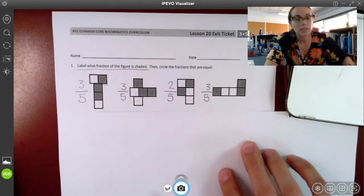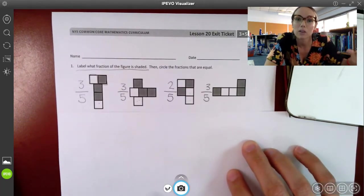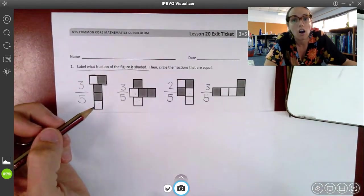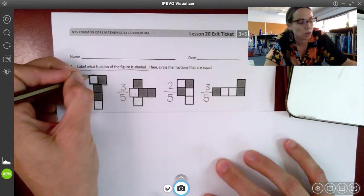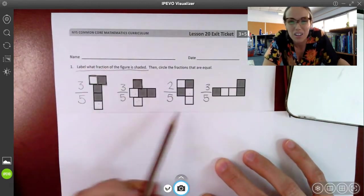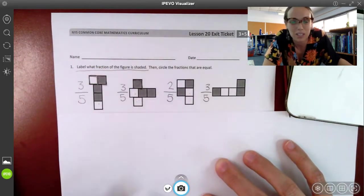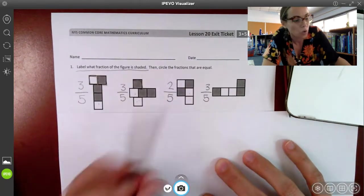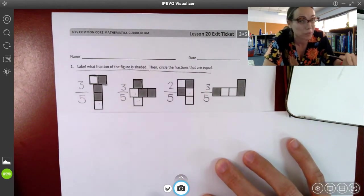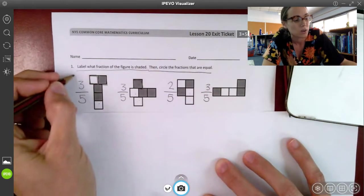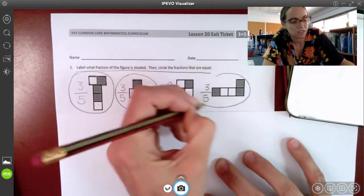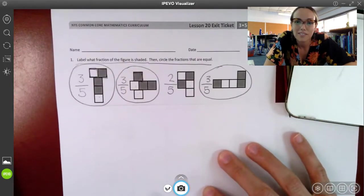Now, even though these shapes look different, they're laid out in different ways, the sizes of each part are equal. We can see that this one part here is equal to this one part here, and they all have the same denominator. They're all split into five equal parts. So now we need to circle the fractions that are equal. And now, because we know all the pieces are equal sizes, we can say three-fifths, three-fifths, and three-fifths are equal.